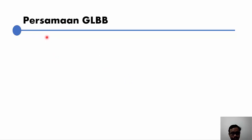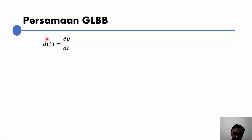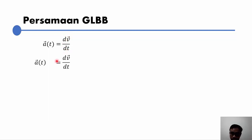Dari rumus GLBB yang sering kita pakai, saya akan mengulas salah satu contoh yang paling sederhana. Tapi sebelumnya saya akan sedikit menjelaskan terkait pendefinisian rumus tersebut, dapatnya dari mana. Kita berangkat dari definisi percepatan sebagai fungsi waktu atau A(T). Percepatan sesaat dirumuskan sebagai turunan kecepatan terhadap fungsi waktu. Jika kedua ruas kita kalikan dengan dT, maka persamaannya menjadi A·dT = dV.